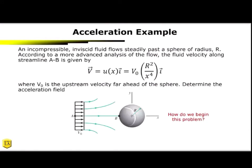Let's do an example. An incompressible, inviscid fluid flows steadily. So this means our d/dt is going to be zero, past a sphere of radius r. According to a more advanced analysis of the flow, the fluid velocity along the streamline ab is given by this equation here. So as you can see, we only have a u component, where u is v_0 r squared over x to the fourth i hat. Where in this case, v_0 here is the upstream uniform velocity far ahead of the sphere. So what we want to do is we want to determine the acceleration field. So how do we begin this problem?